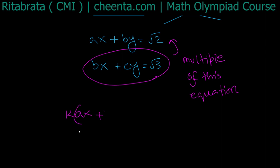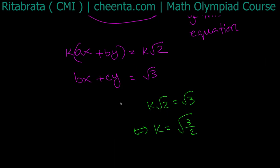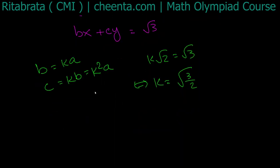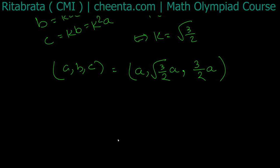So K times (ax plus by) equals K times root 2, and this must equal bx plus cy equals root 3. Matching coefficients, we need K times root 2 equal to root 3, so K equals root of 3 over 2. We also need b equal to Ka and c equal to Kb, which gives c equal to K squared times a. So the triplet (a, b, c) must be of the form (a, Ka, K²a).